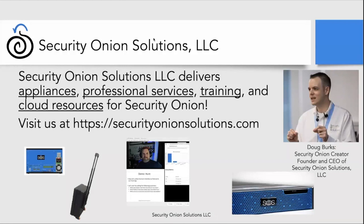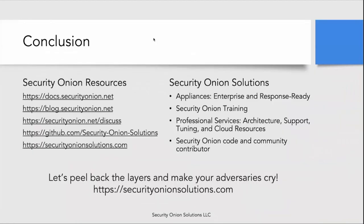We have appliances of all shapes and sizes, and we provide service and support for those appliances. We can help you in any way, shape, or form relating to Security Onion as a platform. You can find us on the web at securityonion.net, where we have documentation, a blog, a discussion forum, and all of our code on GitHub. Security Onion Solutions provides all the products and services around that platform, so if you're interested in the quickest and easiest way to get up and running, reach out to us and we'll be glad to help you peel back the layers of your network and make your adversaries cry.